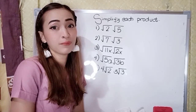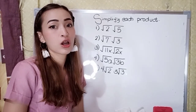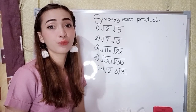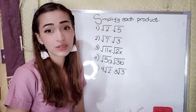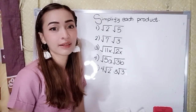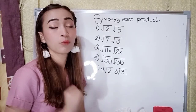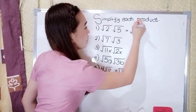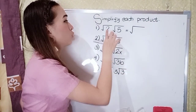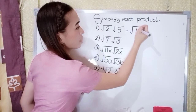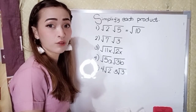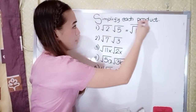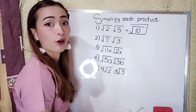For example, we have to simplify each product. For number one, we have the square root of two times the square root of five. Simply multiply the radicands and the numerical coefficients. Two times five is ten. Since the square root of ten is not a perfect square, our answer in number one is square root of ten.